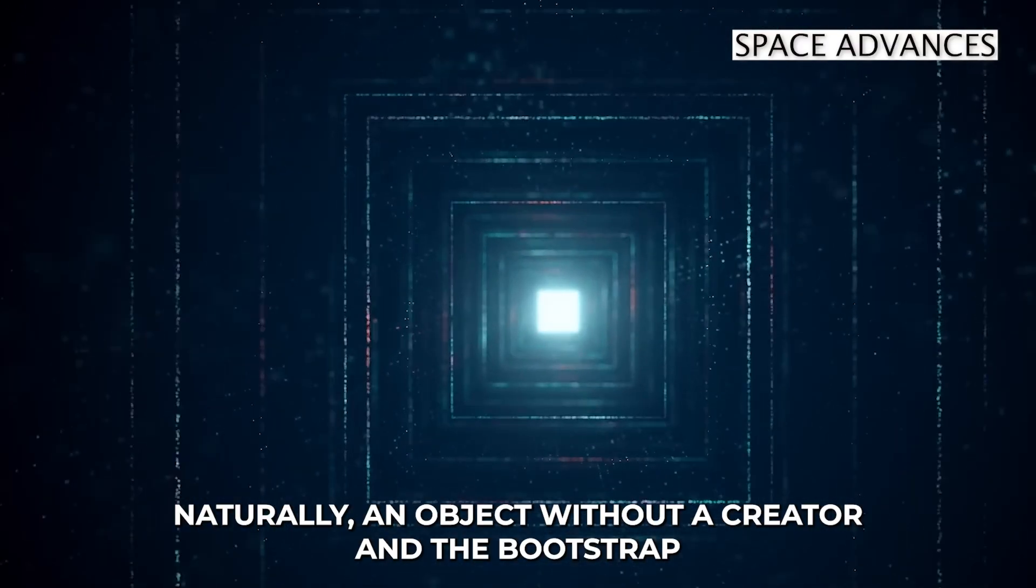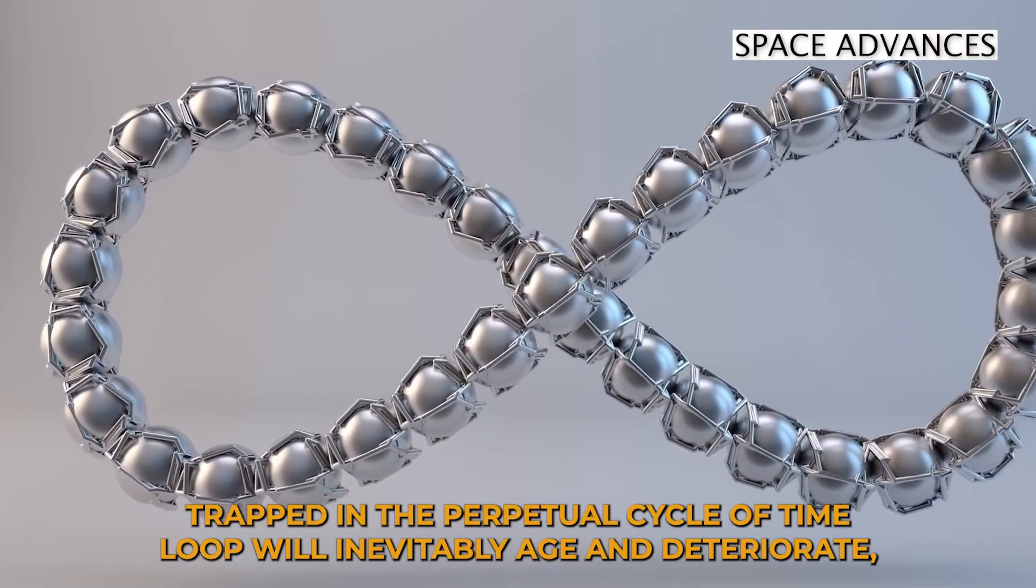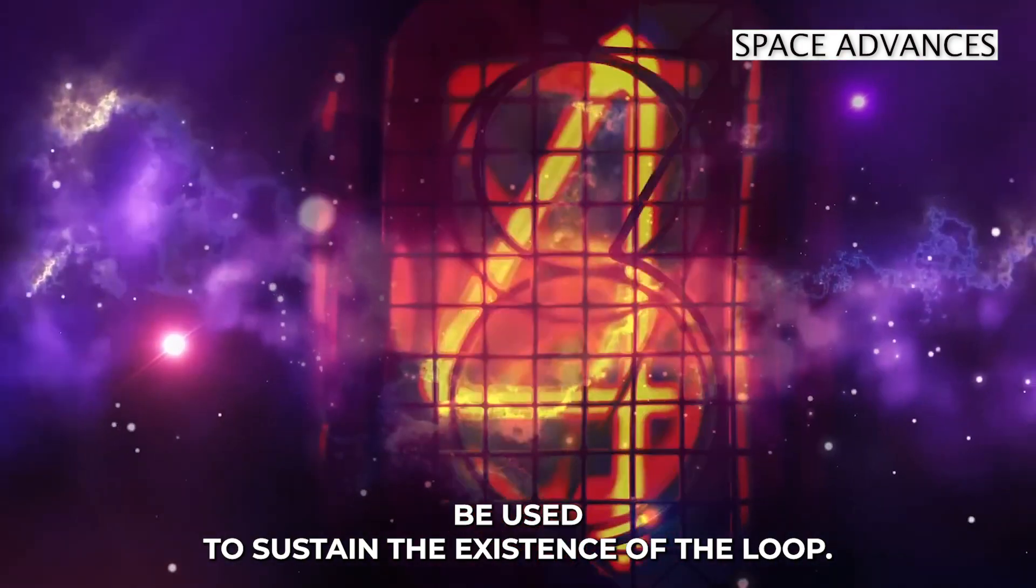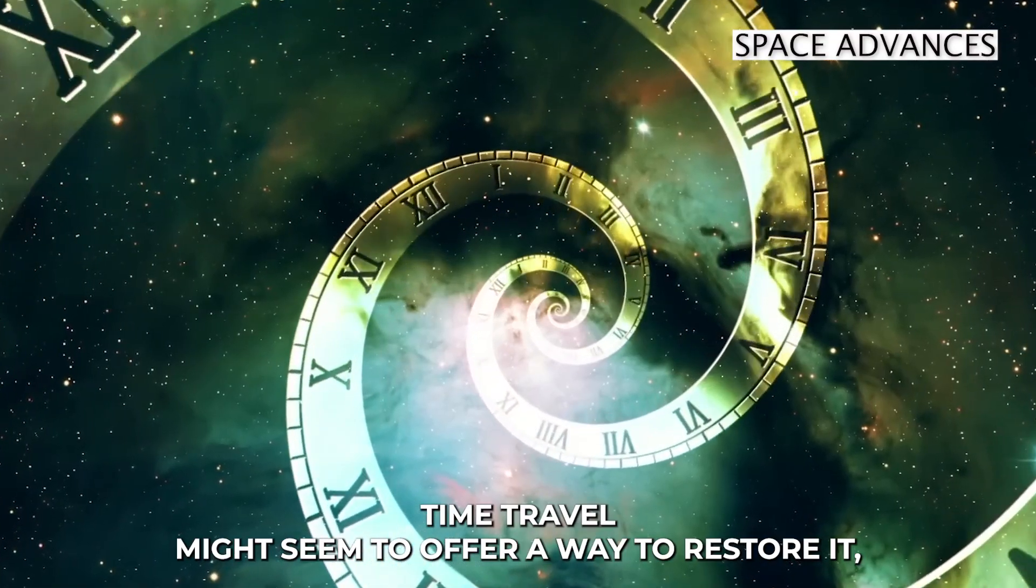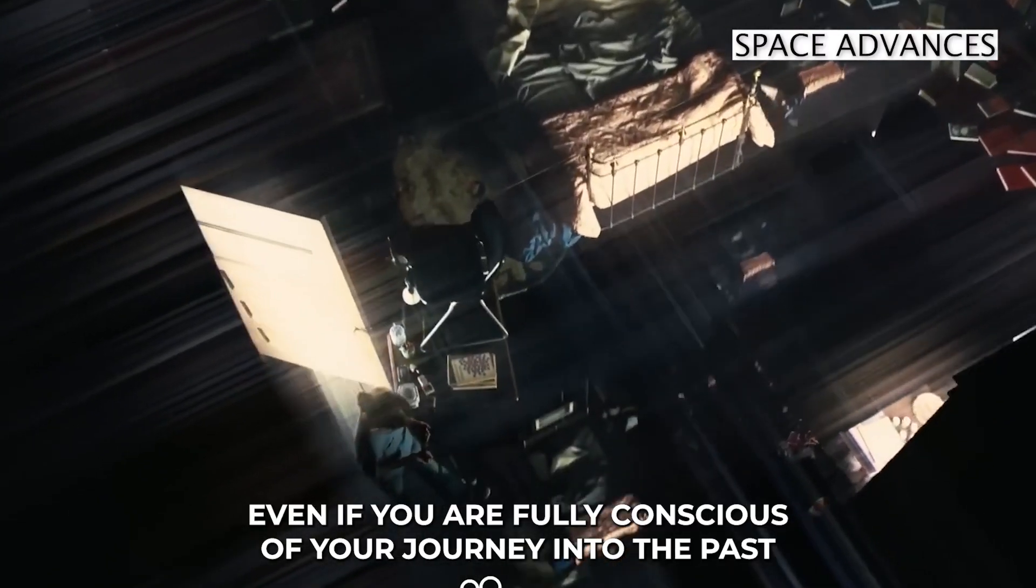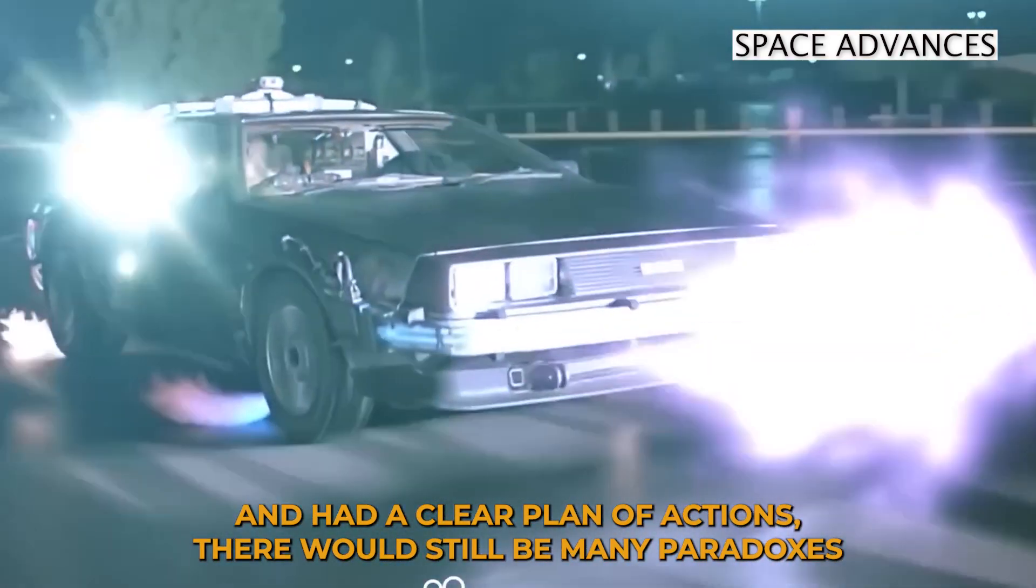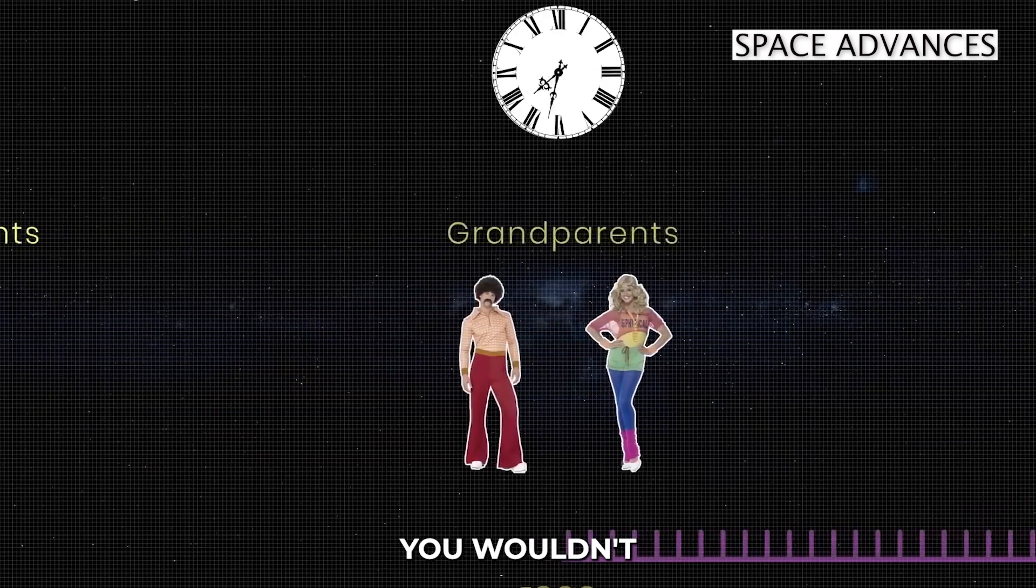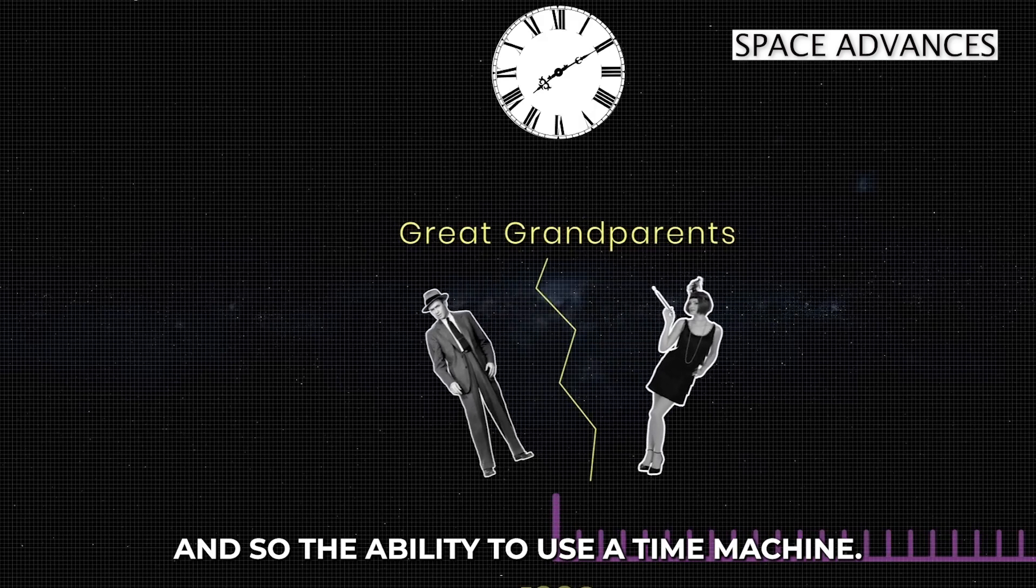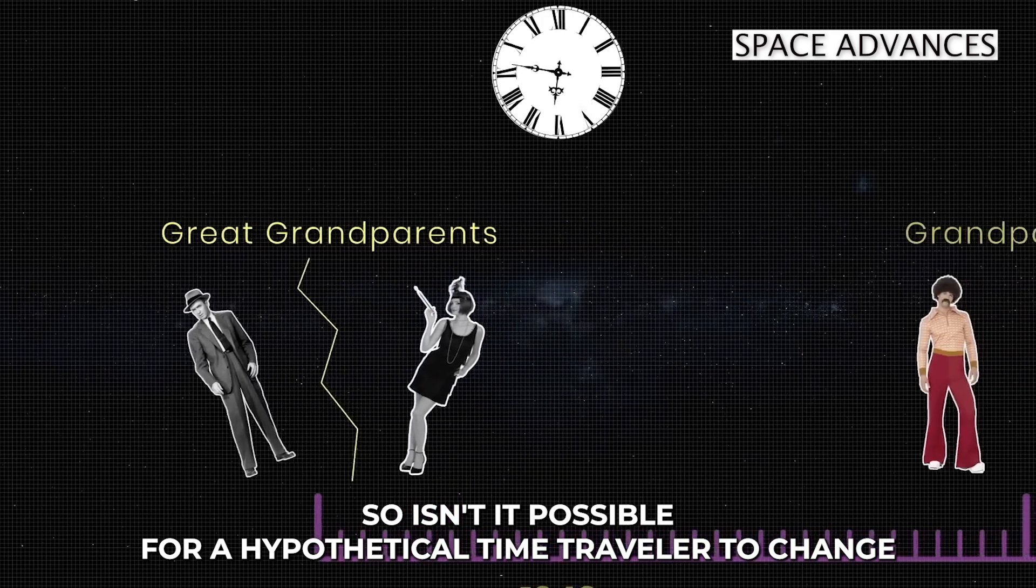Naturally, an object without a creator in the bootstrap paradox leads to another problem, the restoration paradox. An object trapped in the perpetual cycle of time loop will inevitably age and deteriorate, reaching a state where it can no longer be used to sustain the existence of the loop. Time travel might seem to offer a way to restore it, but without knowing its creator or when it was created, we don't know its initial state either. Even if you were fully conscious of your journey into the past and had a clear plan of actions, there would still be many paradoxes. In the famous grandfather paradox, you wouldn't be able to travel into the past and keep your grandparents from meeting, as this would contradict your very existence and so the ability to use a time machine. So, isn't it possible for a hypothetical time traveler to change at least something in the past?